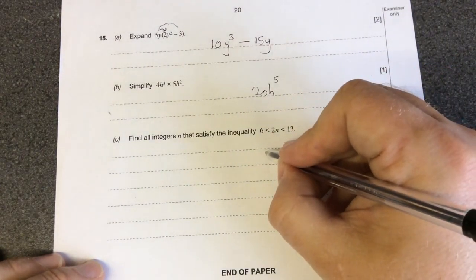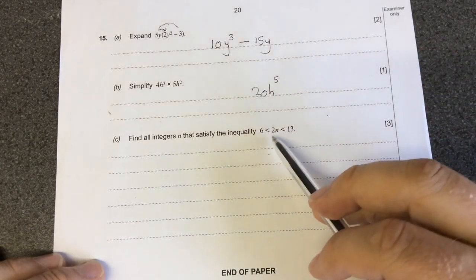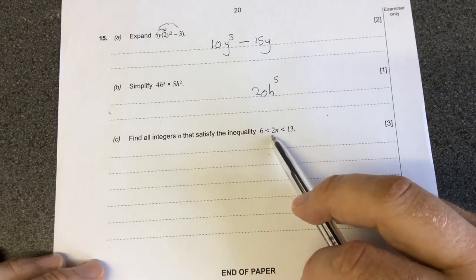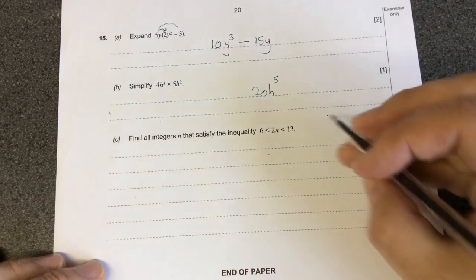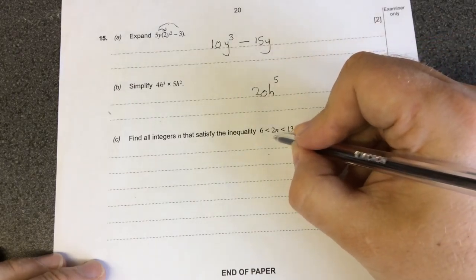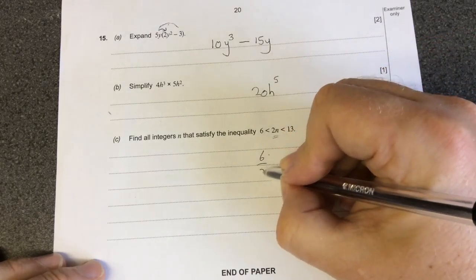With integers you want to know what values of n satisfy the inequality 6 is less than 2n which is less than 13. What I need to do is find 1n. So to find 1n I need to divide both sides by 2.